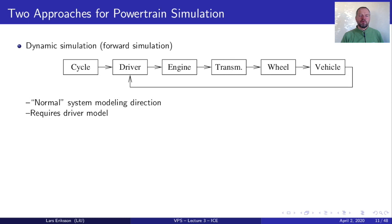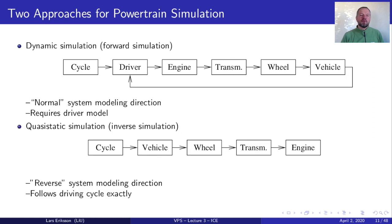Last lecture we started with two different approaches for powertrain simulation. The first is normal dynamic simulation, where we have a cycle and a driver who follows the cycle by pressing the gas pedal, and that information is transmitted to the transmission, to the wheel, and to the vehicle. The other approach — hopefully an eye-opener — is the inverse simulation, called quasi-static simulation. It starts from the cycle and inverts the model: we look at the requirement at the wheel in terms of force, the wheel transmits a torque from the transmission, the transmission asks for a torque from the engine, and the engine outputs how much fuel is consumed. This is reverse system modeling — looking from outputs to inputs.